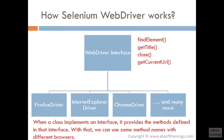Those features together make Selenium WebDriver a great tool for automation. Now let's see how Selenium WebDriver works and its architecture. Technically speaking, in terms of programming language concepts, Selenium WebDriver is an interface — an object-oriented programming language concept. All object-oriented programming languages like Java and C# have the interface concept. WebDriver is an interface and it defines the methods that you want to use to drive a browser.